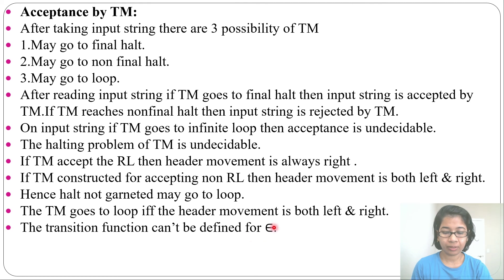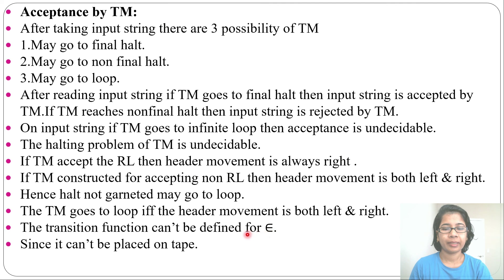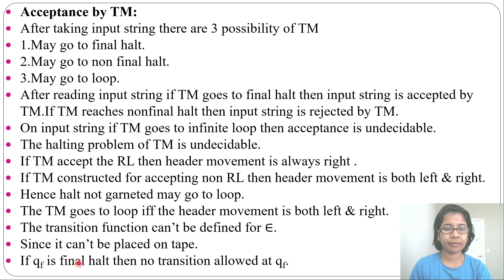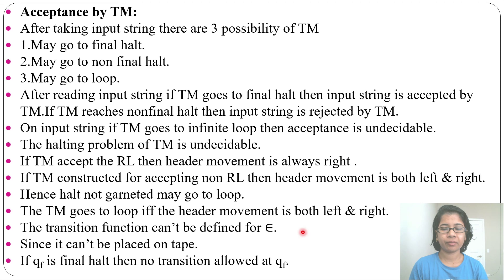The transition function cannot be defined for epsilon, as epsilon cannot be placed on the tape — the tape only contains the input string, input alphabet, plus blank; it cannot contain epsilon. Also, if qf is the final state, no transition is allowed from qf. From the final state, no transition is allowed, which is why the minimum number of states is two. This is sufficient for the introduction of Turing machine; in the next lecture I will construct a Turing machine for regular language.